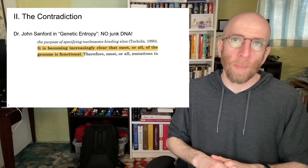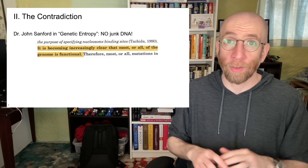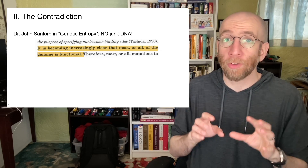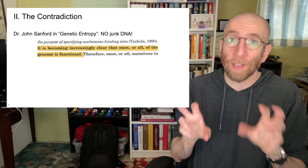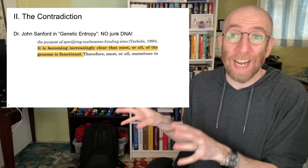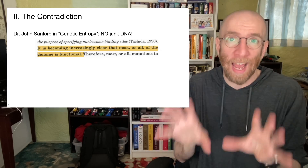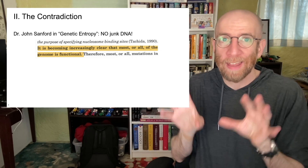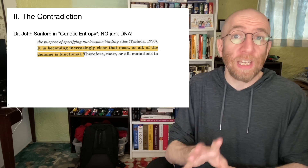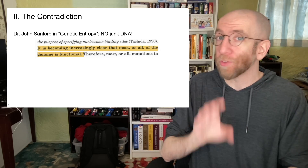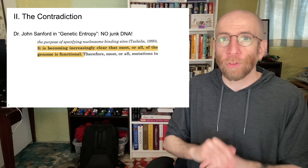Now let's talk about the contradiction. Our main character is going to be Dr. John Sanford, because he actually uses both of these arguments in the book Genetic Entropy. He does this exact thing we're talking about. But as we'll see in a few minutes, he is far from the only creationist that does this.